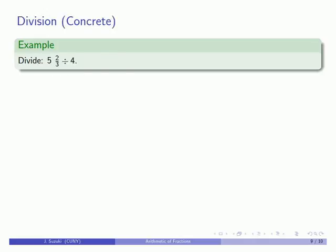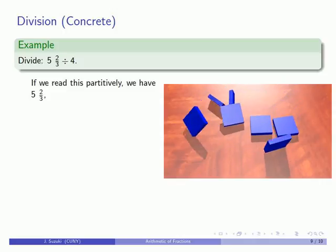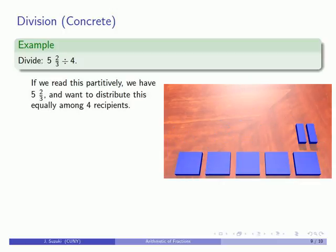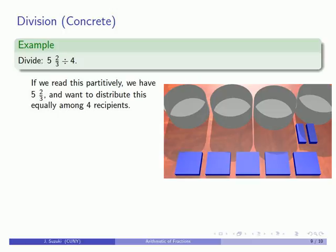How about division? 5 and 2 thirds divided by 4. We could read this partitively by taking 5 and 2 thirds, then distributing this amount among 4 recipients. Each person gets 1.